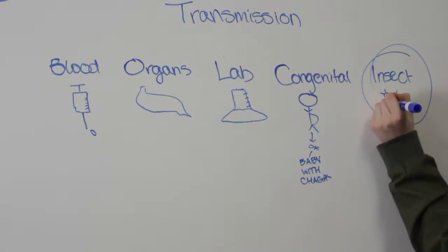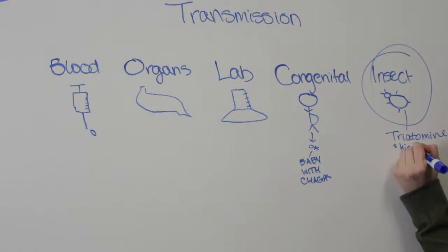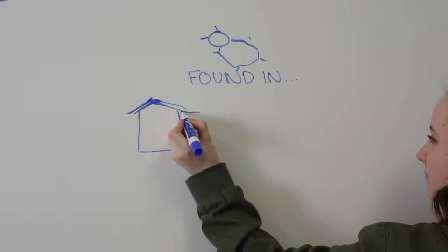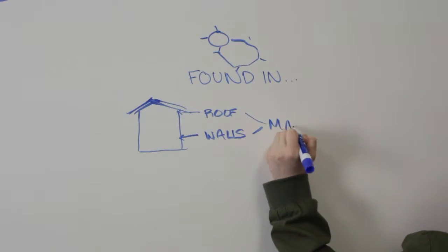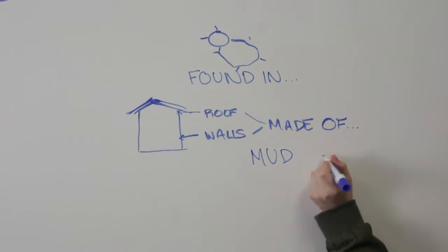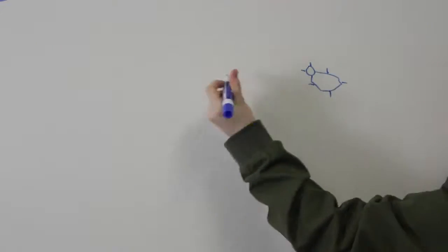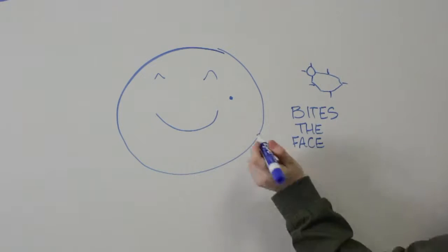The insect vector is the triatomine bug, otherwise known as the kissing bug. The kissing bug hides in the crevices of walls and cracks in roofs in poorly made houses, which are often made of natural materials such as mud, straw, or palm thatch. The kissing bug bites mammals to feed on their blood and then defecates at the site of the bite wound.